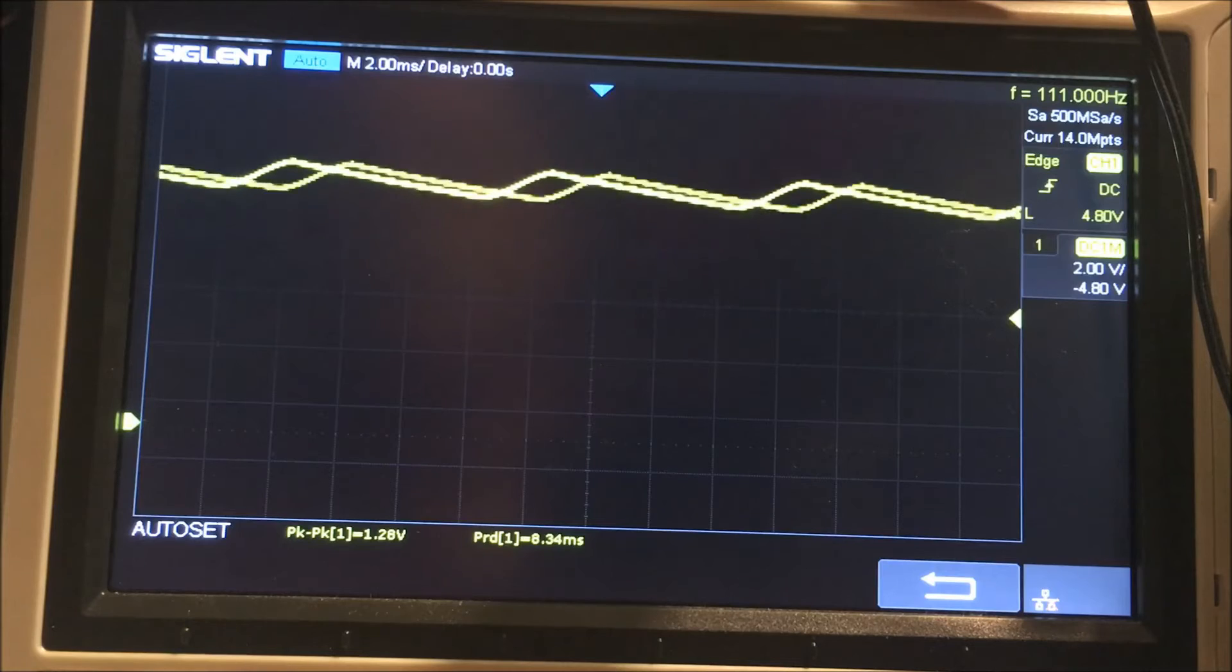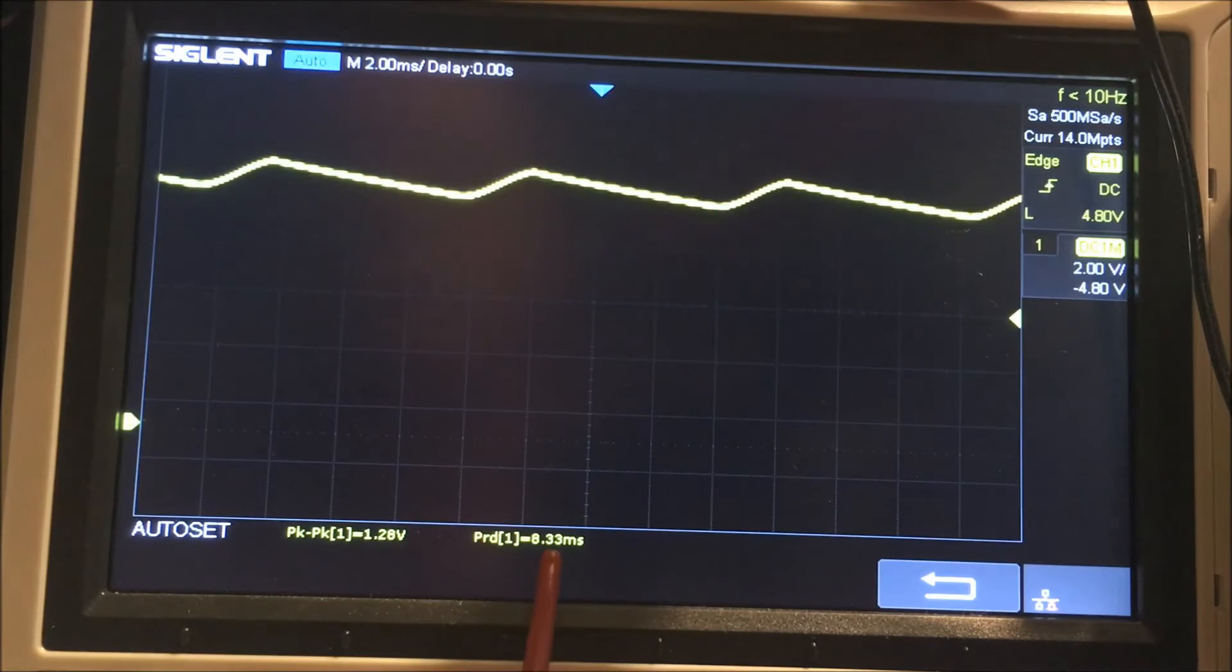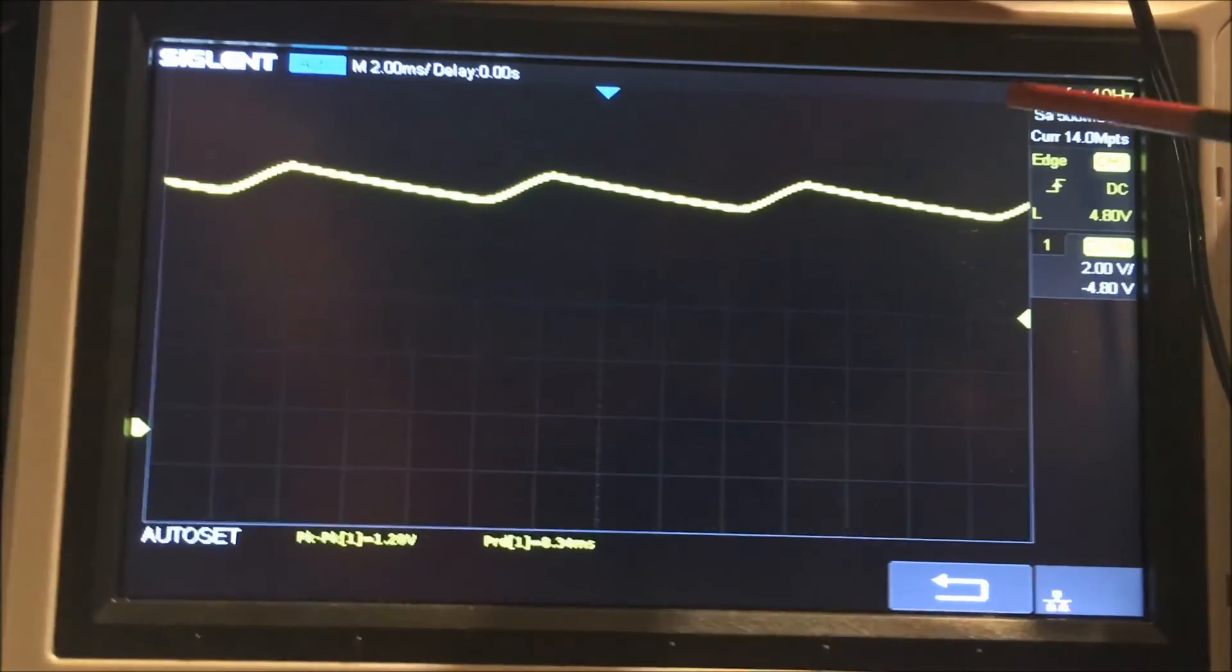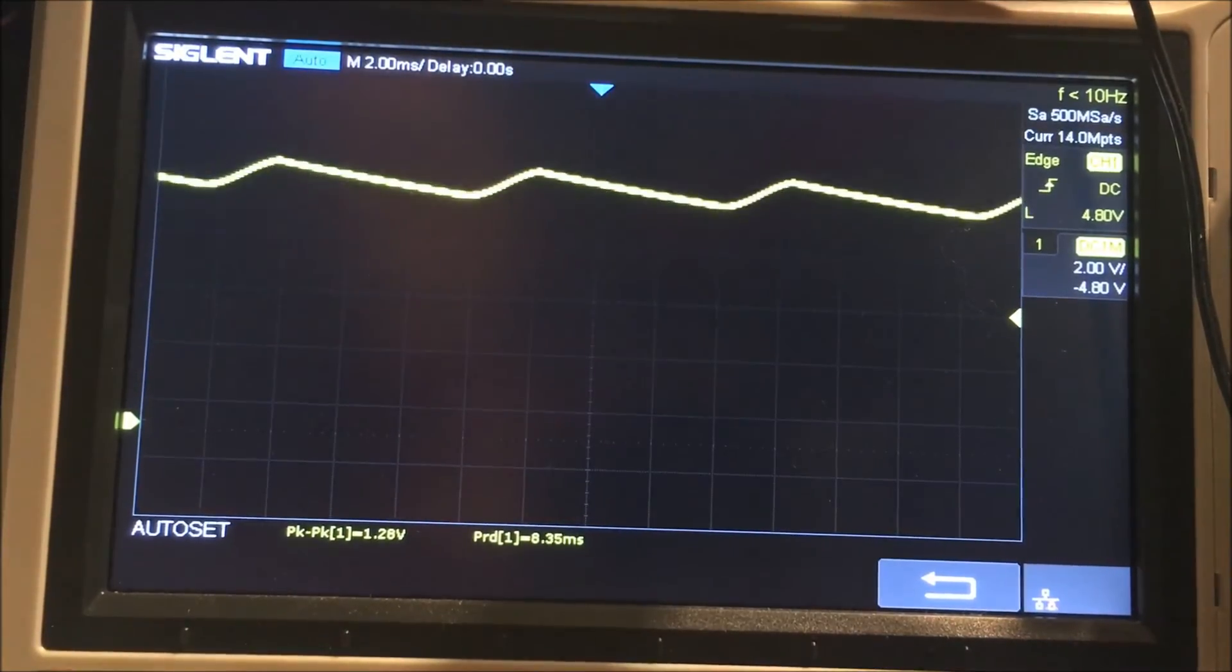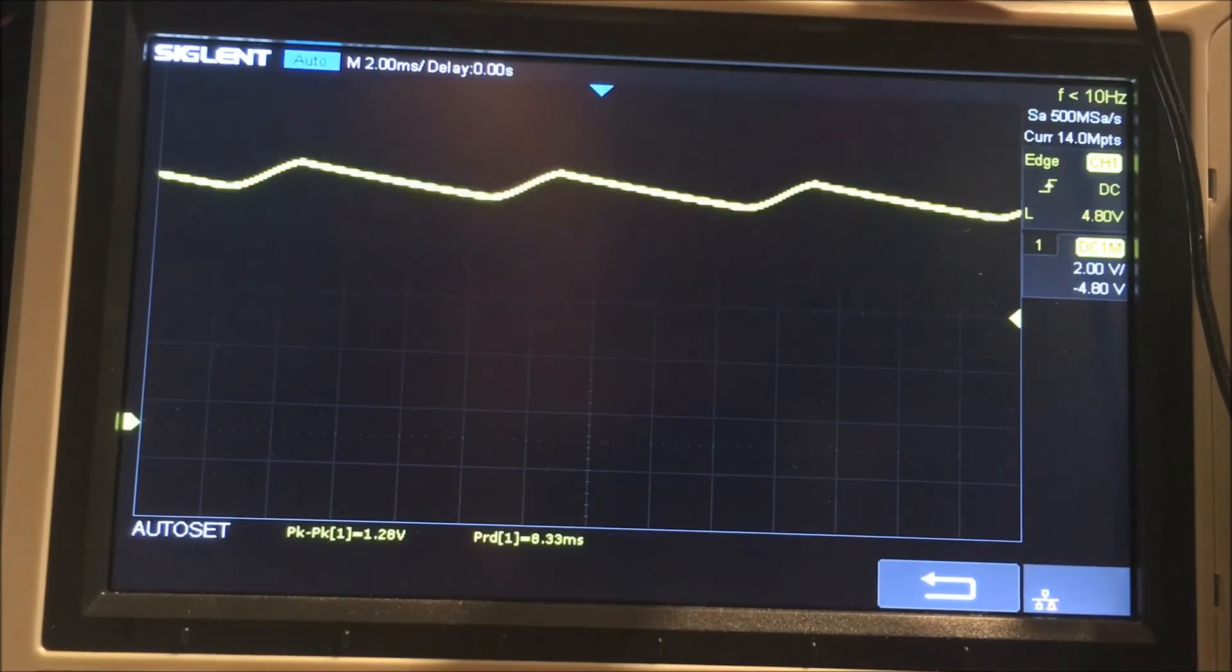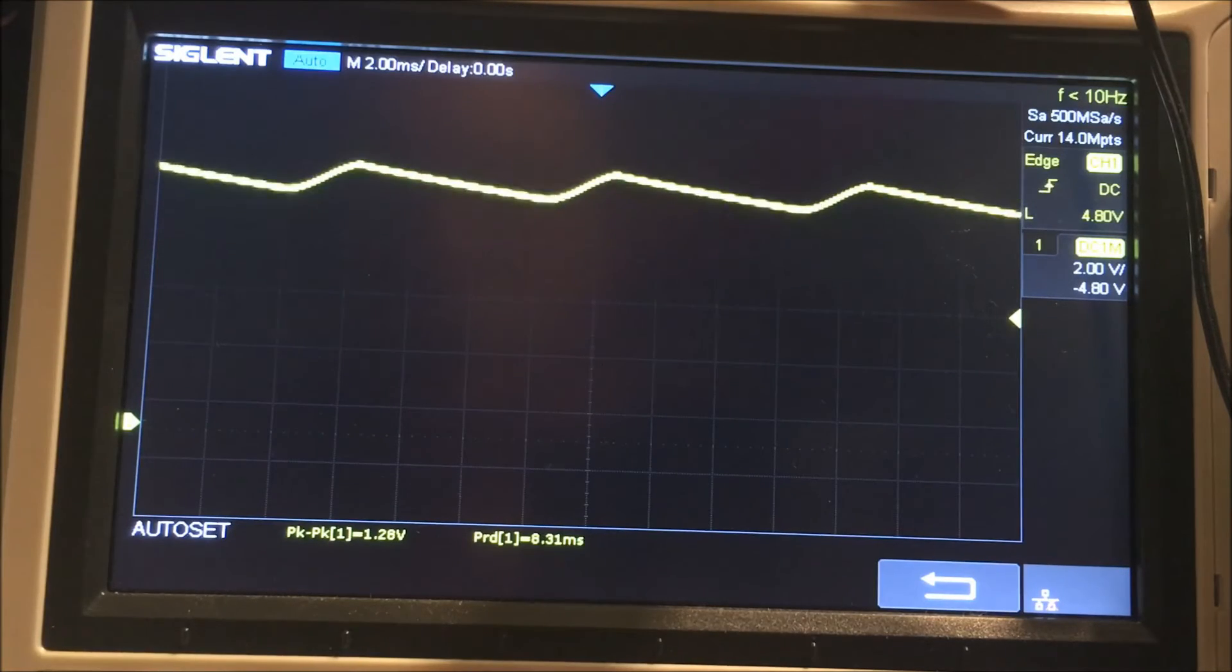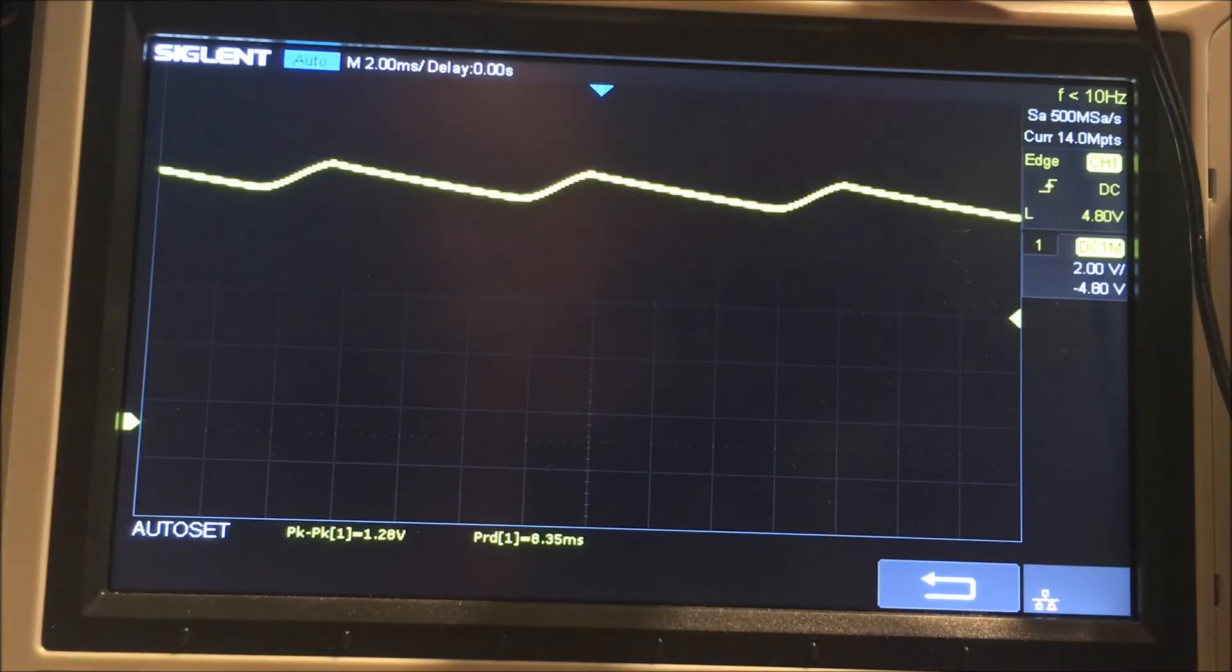Now the ripple is going to be at one volt. Our time between peaks is still at 8.3 milliseconds. This is good enough for the circuit that I'm going to use.